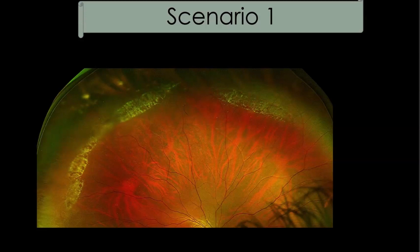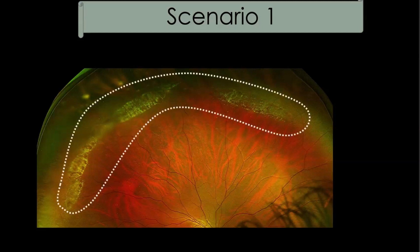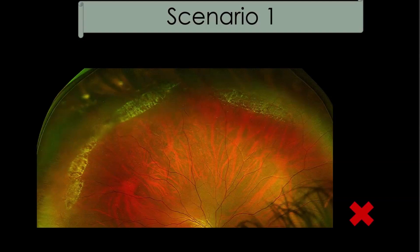Barrage laser can be the most difficult type because lesions can be very anterior. For a patient with multiple large lattices, do not enclose all of them together in one boundary — if there is a gap in the laser marks, all three lattices would be at risk. Instead, try to enclose each lesion separately.